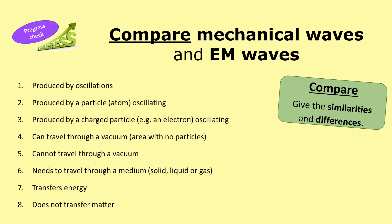Here are eight statements. What you need to do in this task is sort these into your Venn diagram, depending on whether you think they apply to just one particular type of wave, or whether they are relevant to both types of waves. I'm going to give you two minutes to do this task. Ready, go.